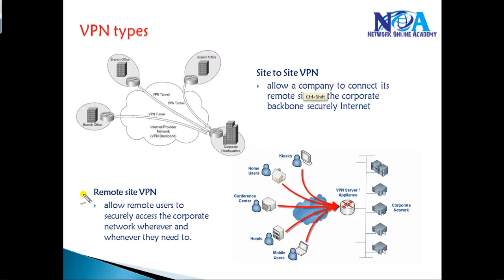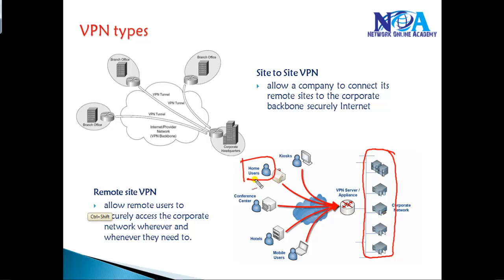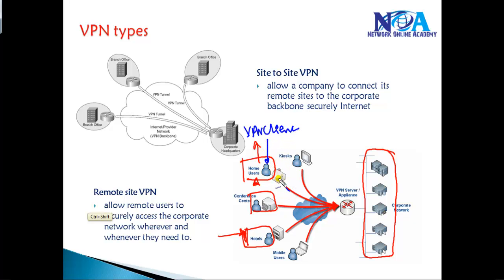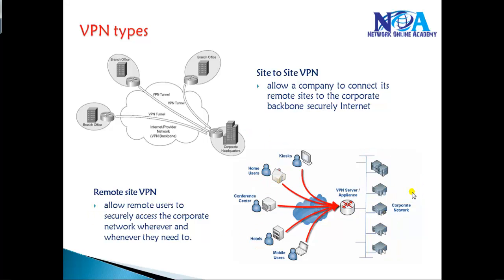The second type is remote access VPN, also called remote site VPN. Here the client connects to the production network from a remote location — whether from home, a hotel room, a conference room, or anywhere while traveling. The user installs VPN client software, clicks to set up a connection over the existing internet, connects to the remote network, and can access LAN resources as if they are sitting in the LAN — in a secure way. This is what we call a remote site VPN.